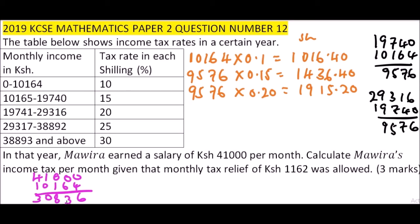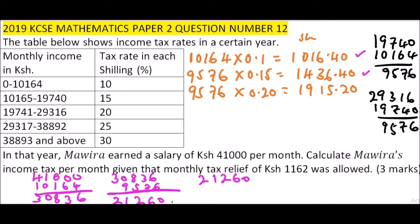So we have 30,836 as the first bracket remainder. Then we subtract the second bracket of 9,576 to get 21,260. That is the second bracket. Then we subtract the third bracket, which is also 9,576, and we get 11,684. That is the third bracket remainder.